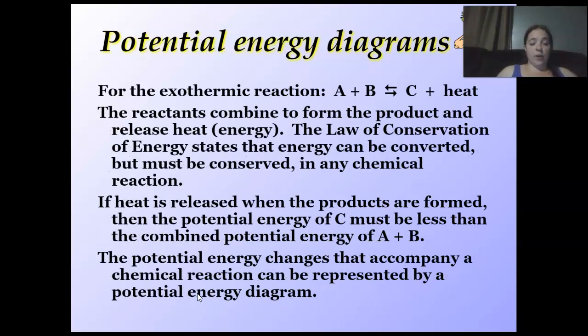For potential energy diagrams, for exothermic reactions, A plus B goes to C in heat. The reactants combine to form a product and the release of energy. Laws of conservation state that energy can't be converted, but it can be conserved in any chemical reaction. Or it can be converted. In this way, it's conserved in the chemical reaction. If heat is released when the products are formed, then the potential energy of C must be less than A and B together. Potential energy changes that accompany a chemical reaction can be represented by a potential energy diagram.